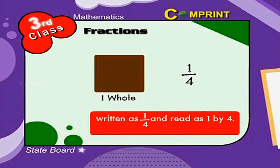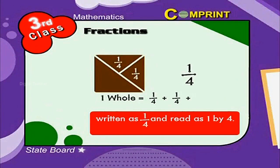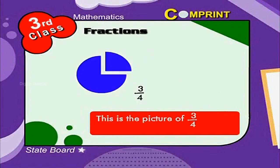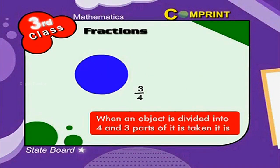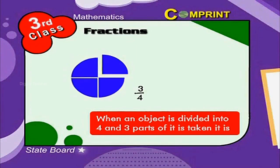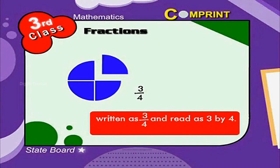One whole is equal to 1/4 plus 1/4 plus 1/4. This is the picture of 3/4. When an object is divided into four and three parts of it are taken, it is written as 3/4.